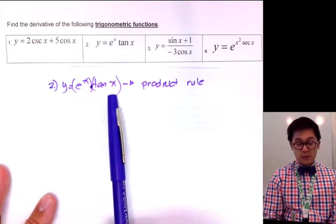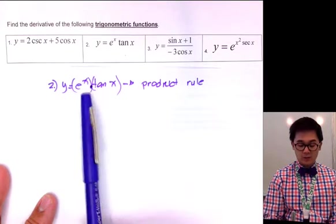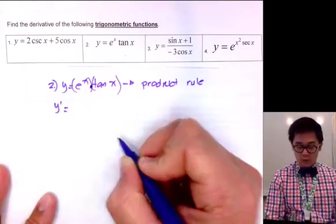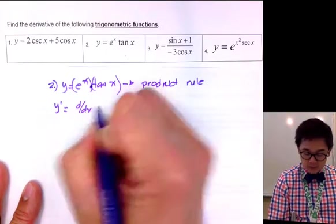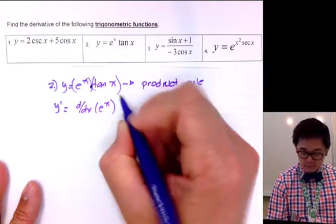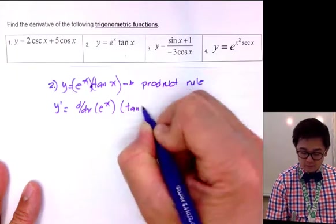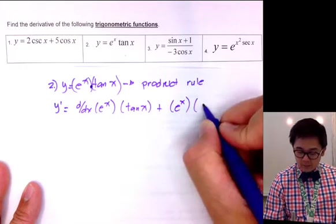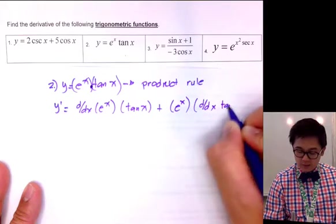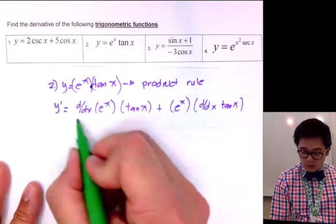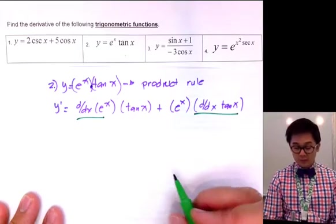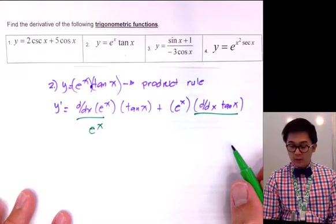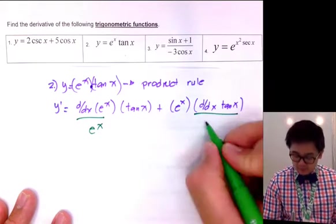The product rule is: derivative of the first times the copy of the second, plus the copy of the first times the derivative of the second. So y prime equals the derivative of e to the x multiplied by tangent x, plus e to the x times the derivative of tangent x. The derivative of e to the x is simply e to the x, and the derivative of tangent x is secant squared x.